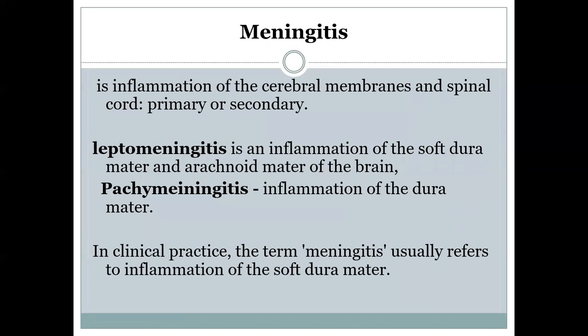The most common disease presenting with meningeal symptoms is meningitis. Meningitis is inflammation of the cerebral membranes and spinal cord. It can be primary or secondary. The most common forms are leptomeningitis and pachymeningitis. Leptomeningitis is inflammation of the soft pia mater or arachnoid membrane of the brain, while pachymeningitis is inflammation of the dura mater.